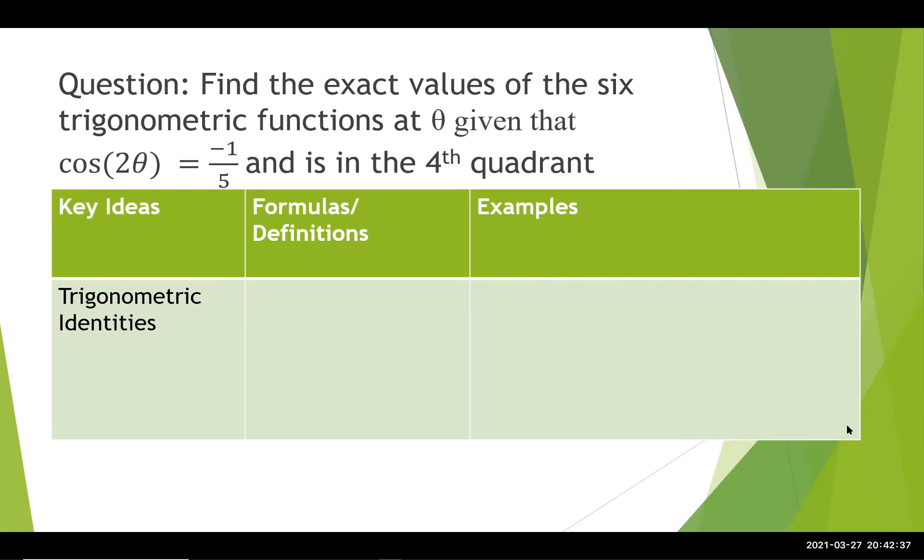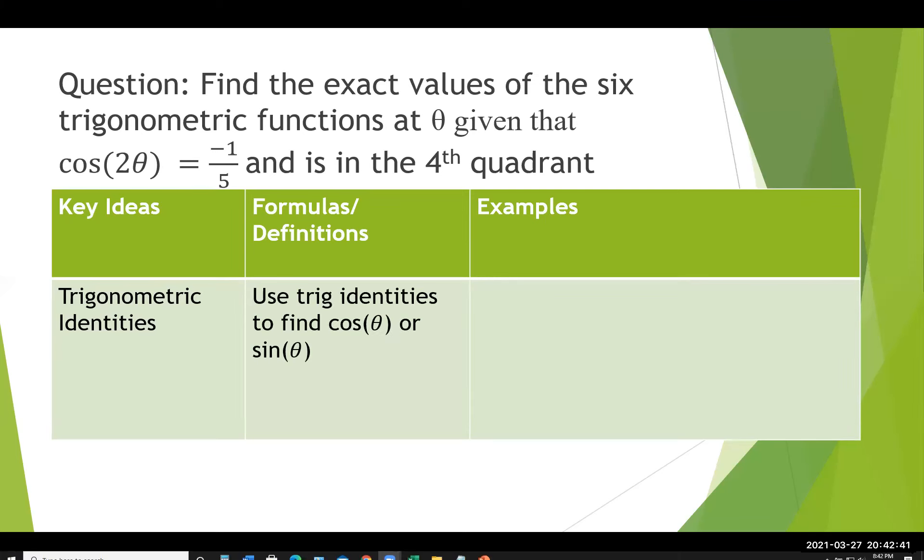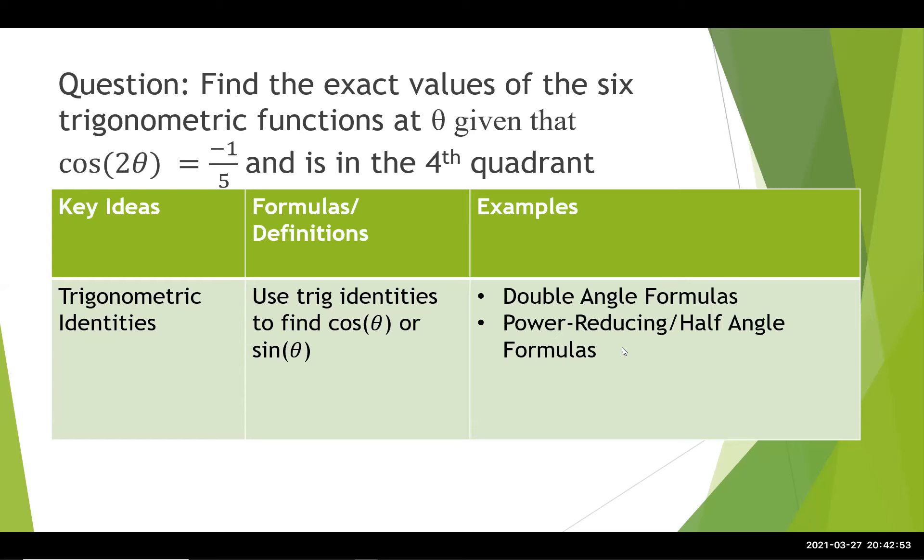This is where we need to have a good understanding of trigonometric identities. So we're going to use trigonometric identities to find either cosine of theta or sine of theta when we are given the 2. So we might look at the double angle formula, the power reducing, or half angle formulas.